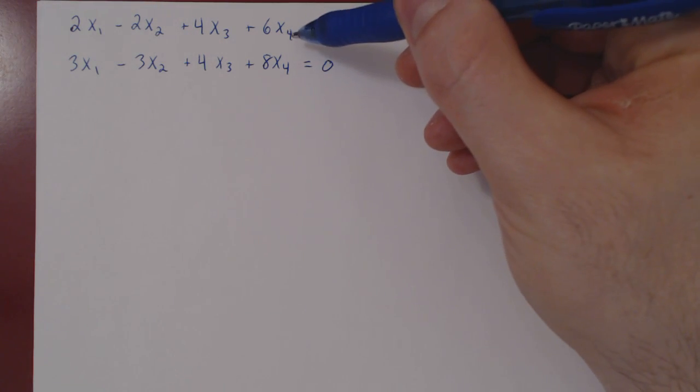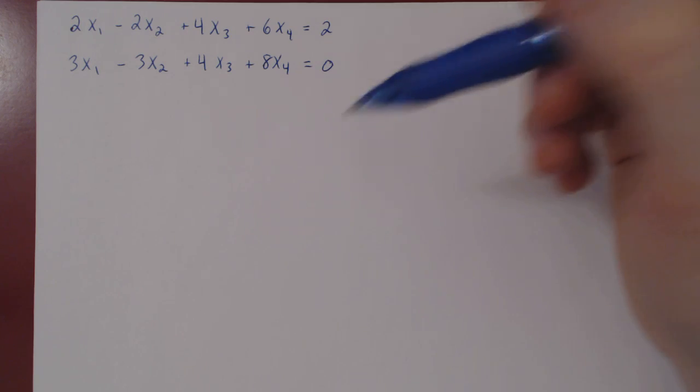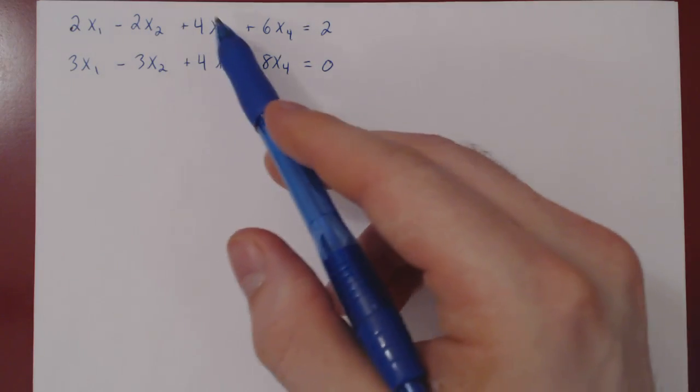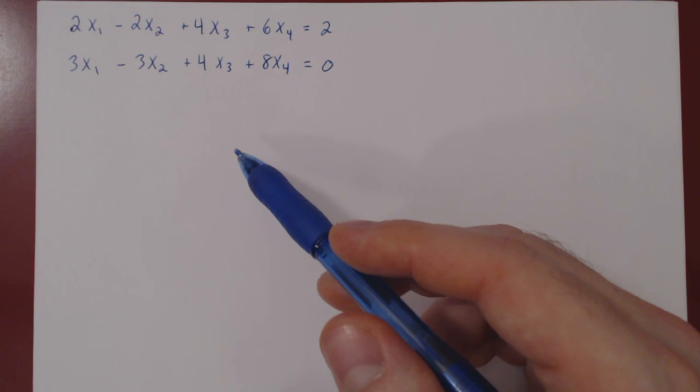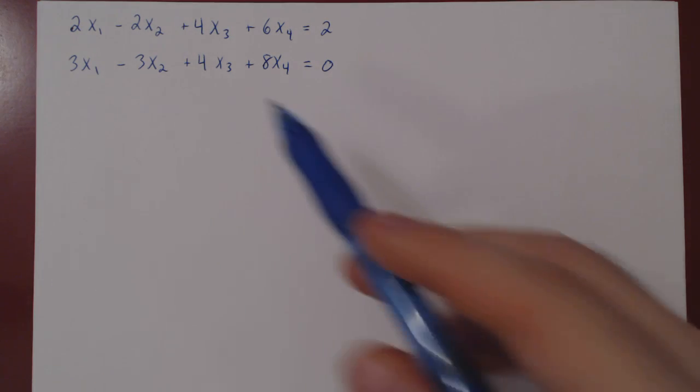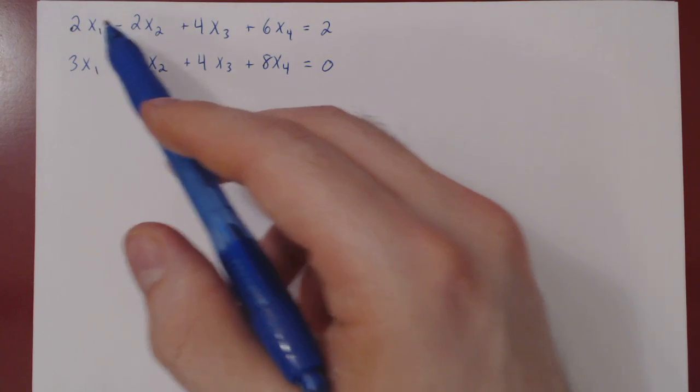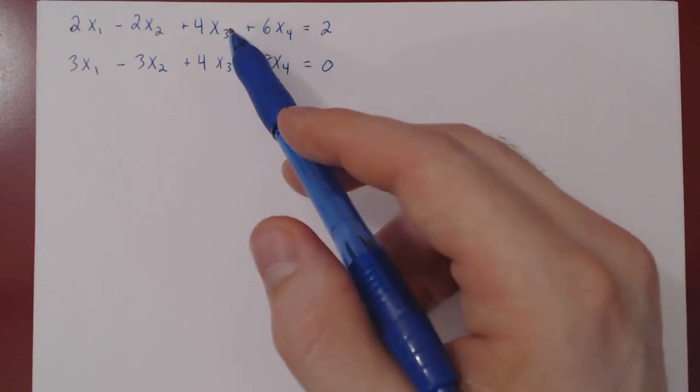Now, indexing variables is very useful if you have a large number of variables. We could have used here x, y, z, and w. But what if we have a system with, say, a thousand variables? We're running out of letters. So when you start having a lot of variables, then you start indexing them.